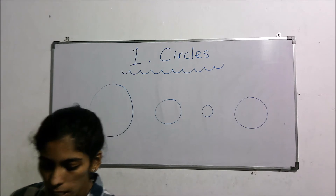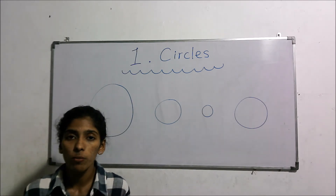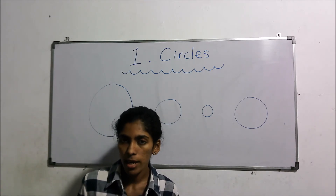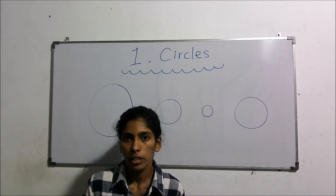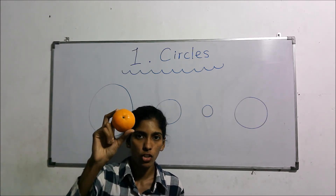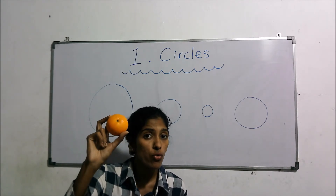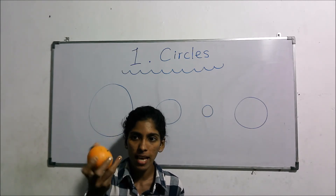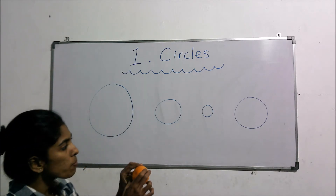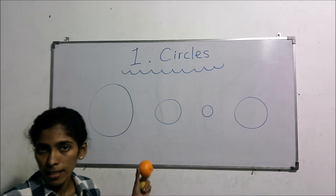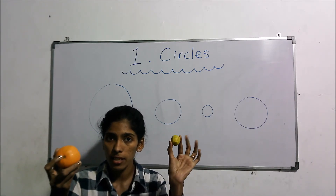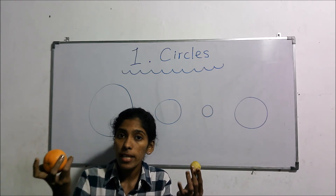But children, sometimes there are objects we think have circular shapes — actually those don't. For example, sun, moon, earth, orange — we think they have a circular shape and we can draw a circle with them, but it's wrong. Because they have a spherical shape, like a sphere. They don't have a circular shape, and by keeping them on a surface we cannot draw a circle.